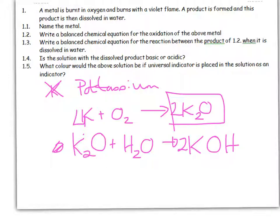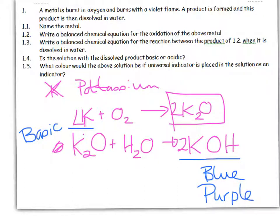Is the solution with the dissolved product acidic or basic? Whenever I've got a metal oxide, metal oxides are always basic. And what color would the above solution be if I put universal indicator in? We're now expected to know that universal indicator turns blue or purple if it's going to be in a basic solution. And it will turn red, yellow, orange if it is in an acidic solution.